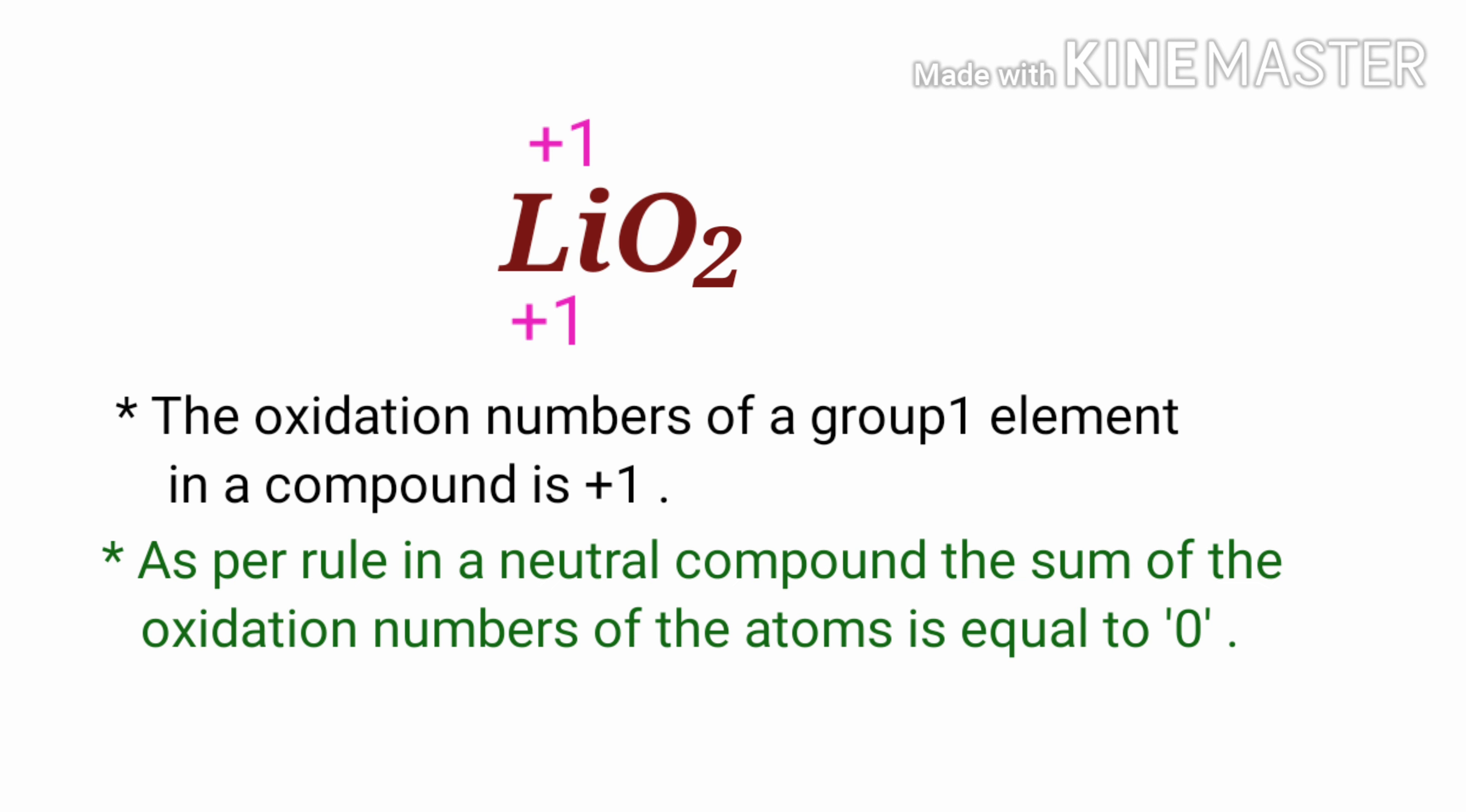As per rule, in a neutral compound, the sum of the oxidation numbers of the atoms is equal to zero. So the numbers along the bottom must add up to zero. Therefore, the number under O₂ must be -1.